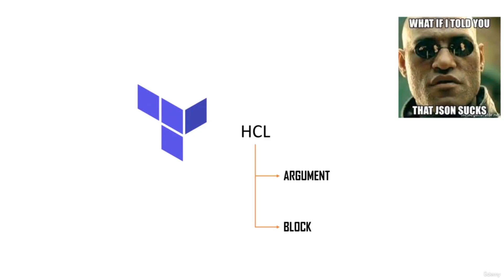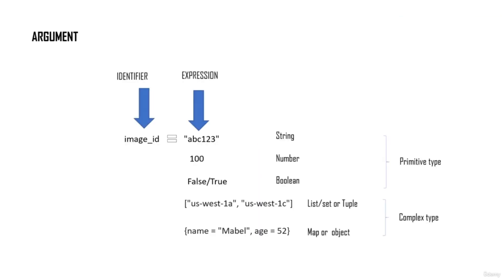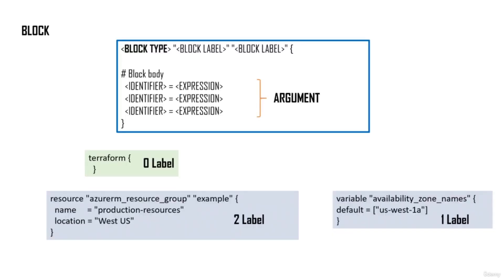Let's talk about the HashiCorp configuration language, also known as HCL. HCL consists of arguments and blocks. HCL is much simpler to understand than JSON. Arguments consist of an identifier and an expression. The identifier is, for example, 'image_id', and expressions can be of types: string, number, boolean, or complex types such as list, tuple, map, or object. A block consists of a block type, a list of block labels, followed by curly braces containing a set of arguments.